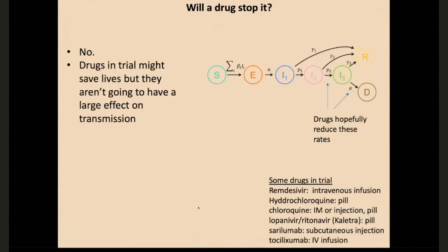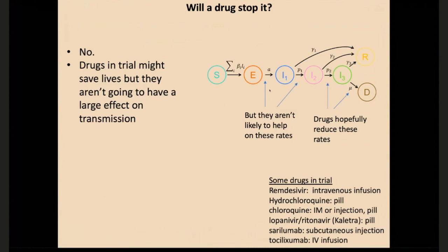Will a drug stop it? Not the drugs we've been talking about today. These drugs will probably save a lot of lives if they work, but they're going to affect the death rate and the progression from moderate to severe disease. In order for a drug to really affect the transmission dynamics, we'd basically need an over-the-counter cold, sniffy-nose COVID drug to have a big impact on the epidemic. So even if we have a drug, we'd still have a lot of infected people, and we need to think through how we'd be able to treat them effectively.